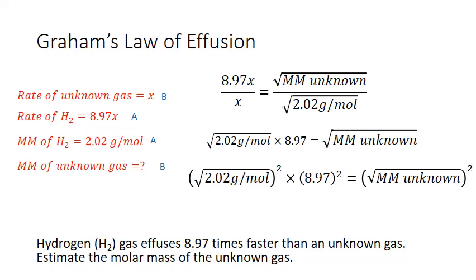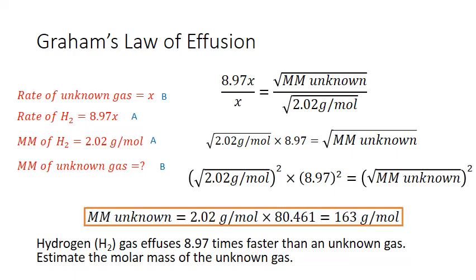What this is going to give me, it's going to eliminate my square roots for the 2.02 and for the molar mass of my unknown. And it gives me 80.461 for the square of 8.97. So my molar mass of my unknown is 2.02 times 80.461, which equals 163 grams per mole.